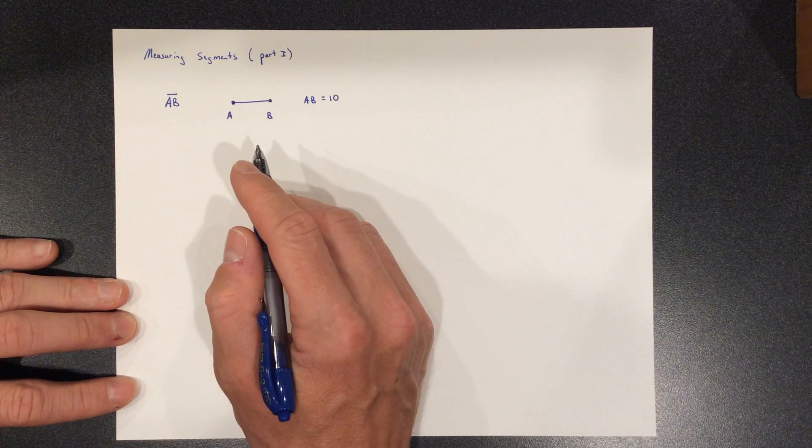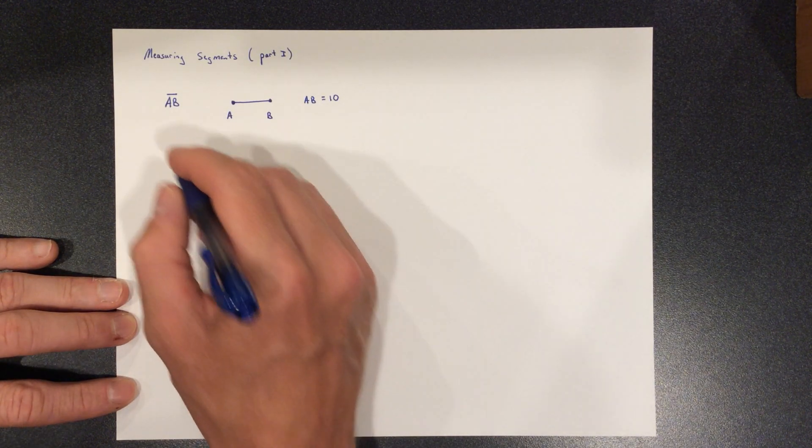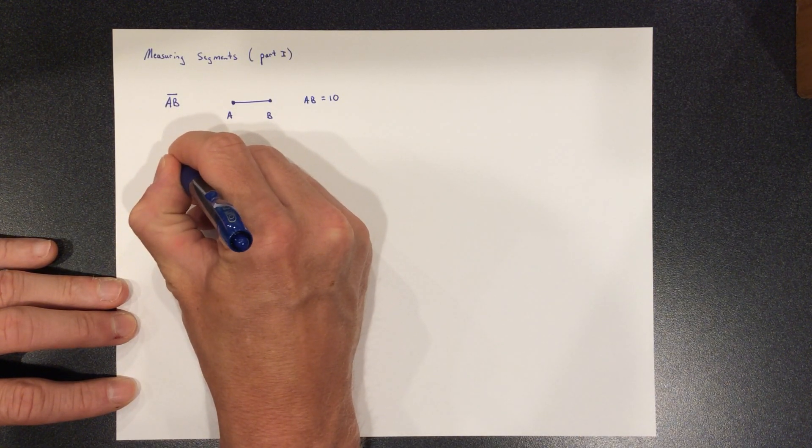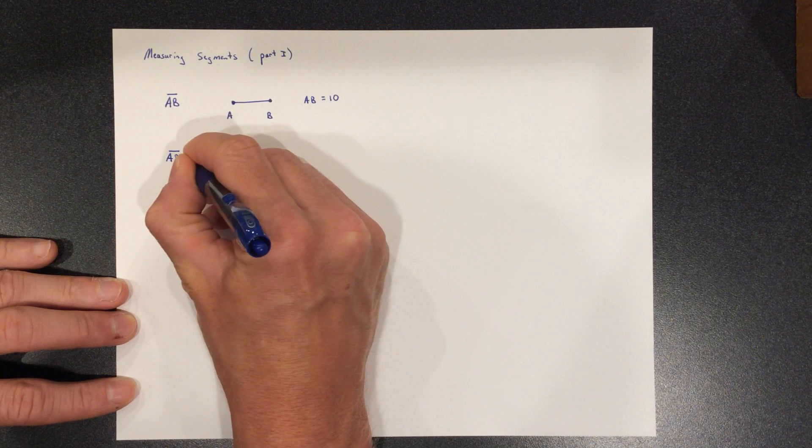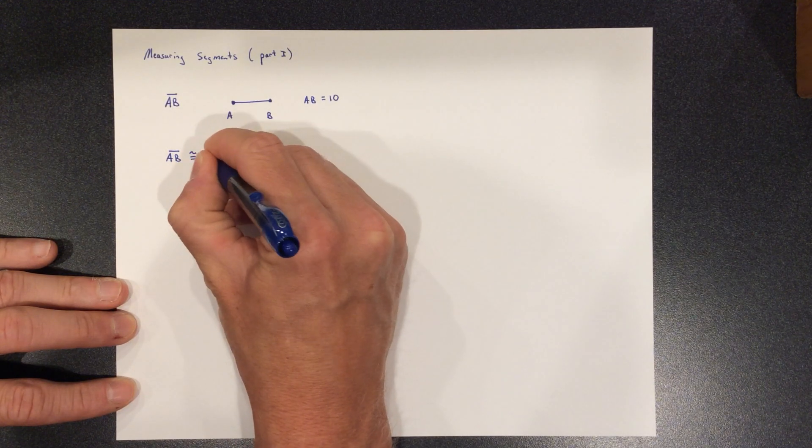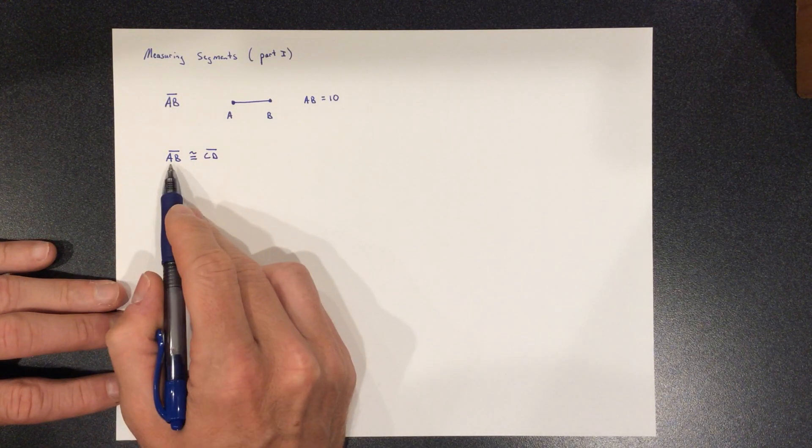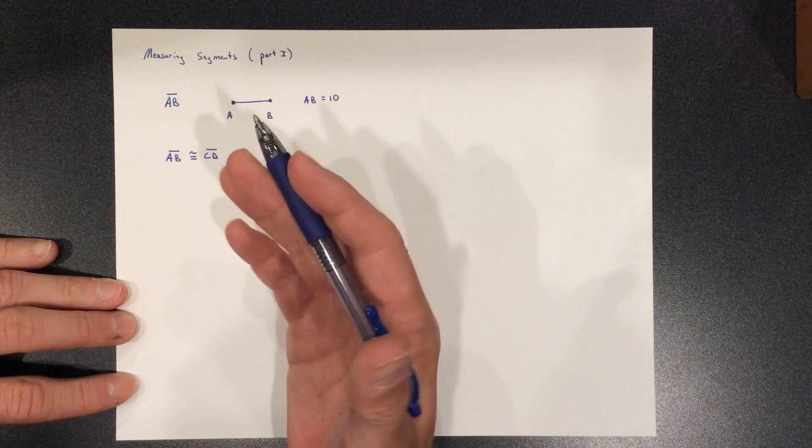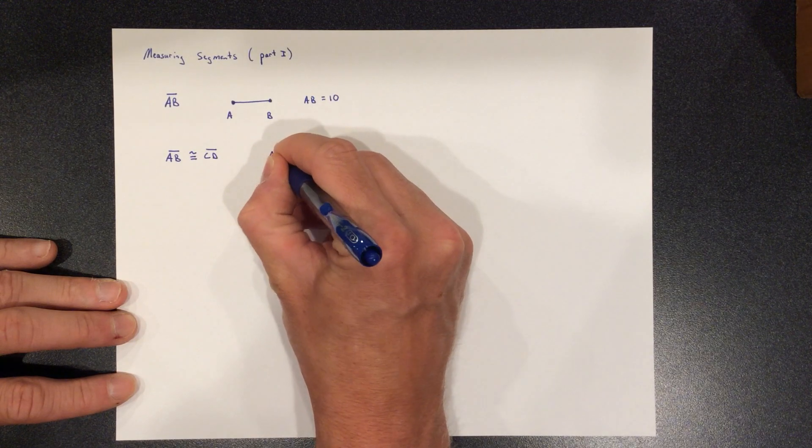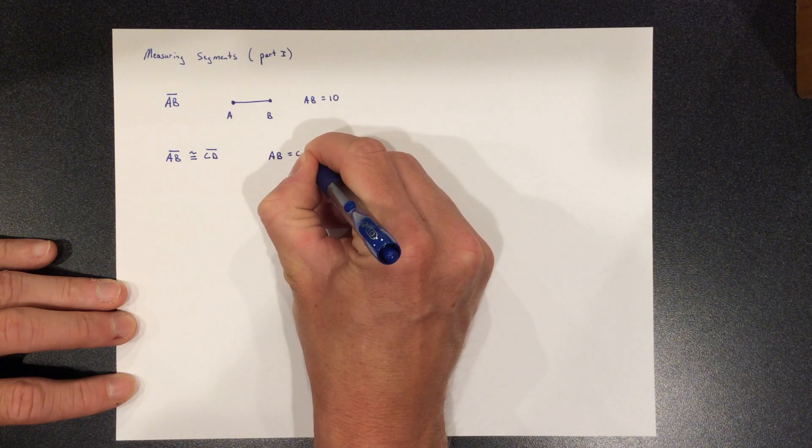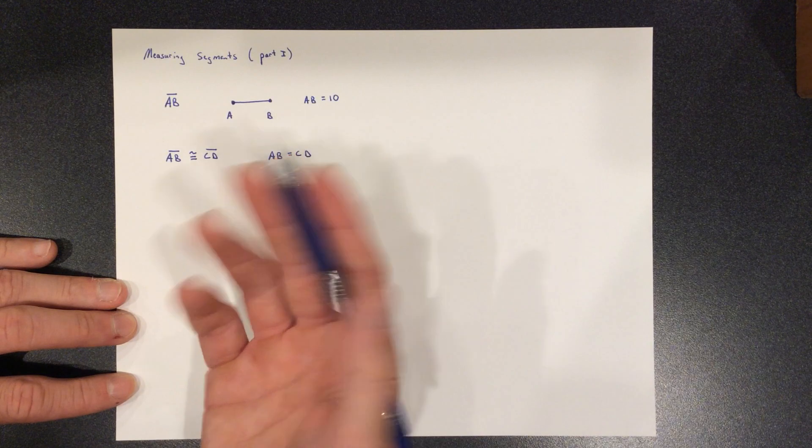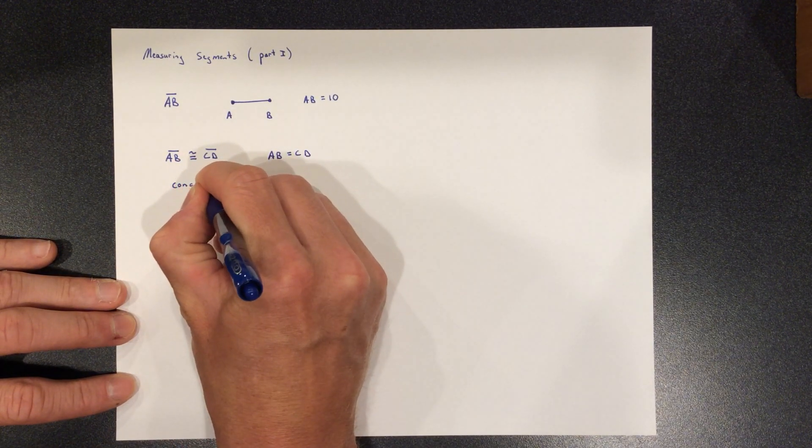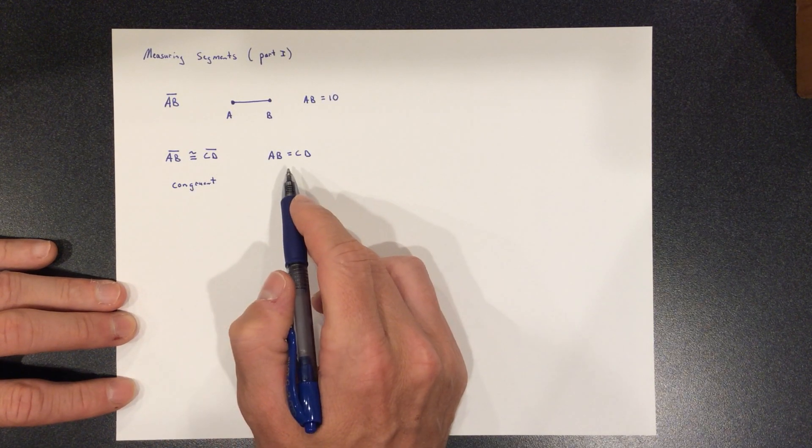We can define segments to be congruent with each other. So the symbol for congruent, AB is congruent with CD, meaning line segment AB is congruent with line segment CD if the length of AB equals the length of CD. They're the same length. That's what it means to be congruent.